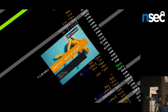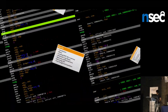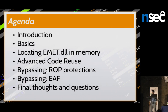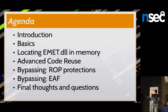Let's have a look at the plan for the day. First, I will give you a short introduction about my person and my company. After that, we come to the basics chapter where I talk about different mitigation techniques like data execution prevention and address space layout randomization, and how we can bypass these. I will also introduce the Firefox Array.reduceRight vulnerability, which I will use to show all my bypass techniques.